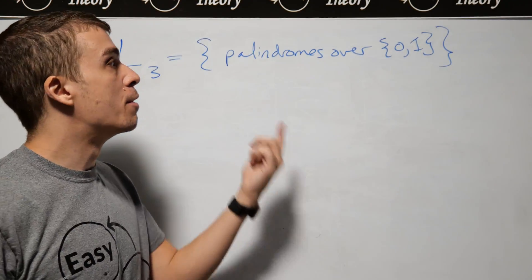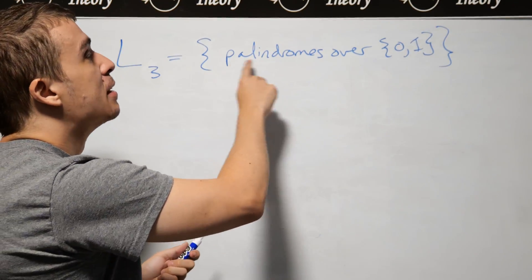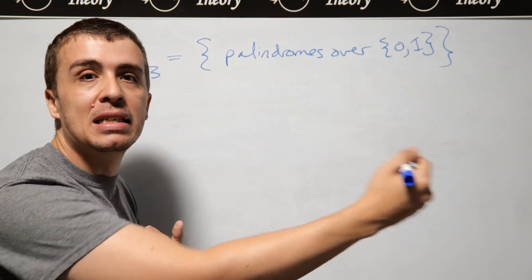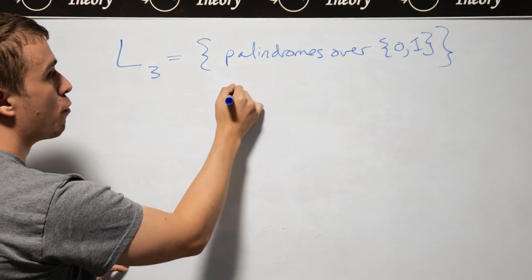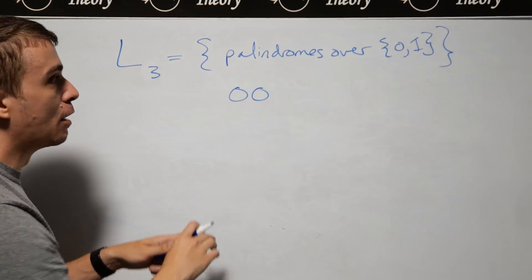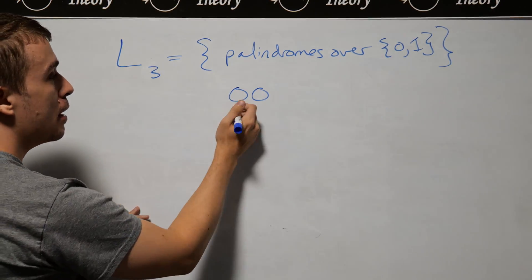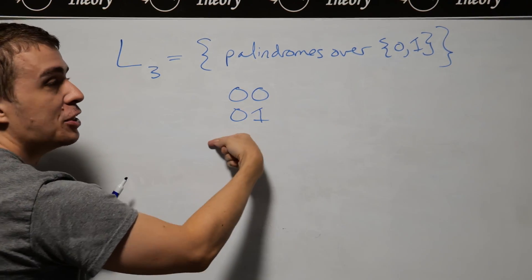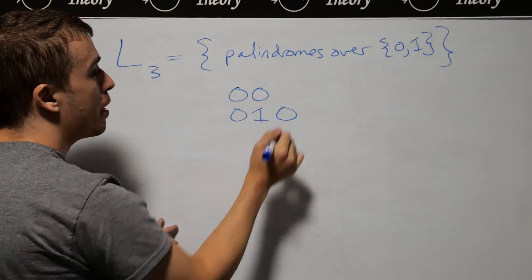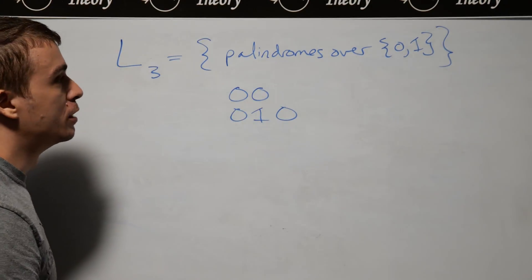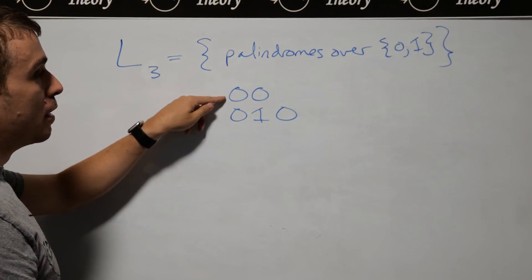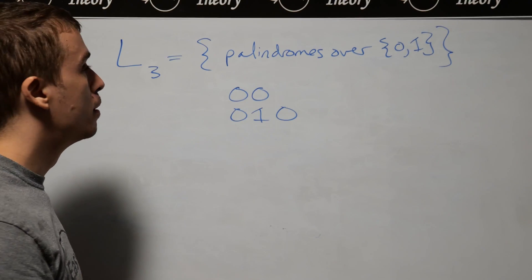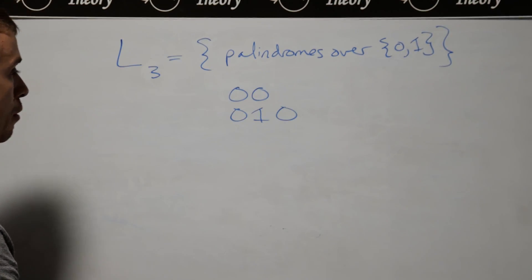Let's make a context-free grammar for the set of palindromes over the alphabet {0, 1}. A palindrome is a string that is exactly the same forwards as backwards. For example, 00 is a palindrome. The string 01 is not a palindrome because forwards it's 01 and backwards it's 10. But if we add a 0 on the end to get 010, it's exactly the same forwards and backwards. Note that palindromes can have even or odd length, and we want to make a context-free grammar for this.